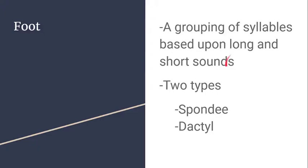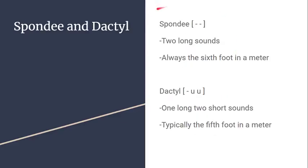There are two types of feet: the spondee and the dactyl. The spondee, represented by dash-dash, is two long sounds — for example, 'ka-no-tro,' where 'o-tro' has that pause of two longer sounds. It will always be the sixth foot in the meter, which makes breaking down the scansion very helpful because you always know there will be a spondee at the end.